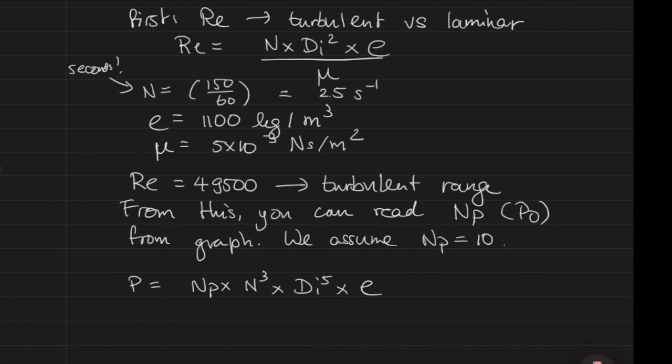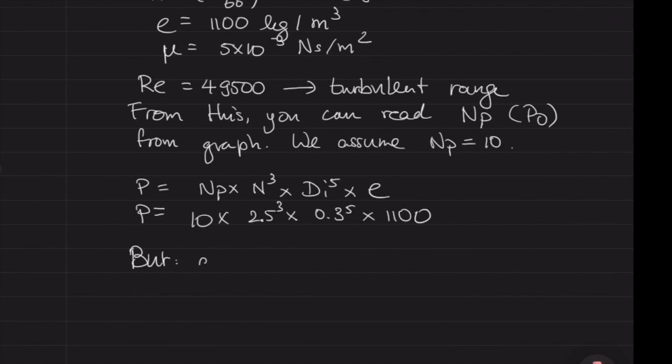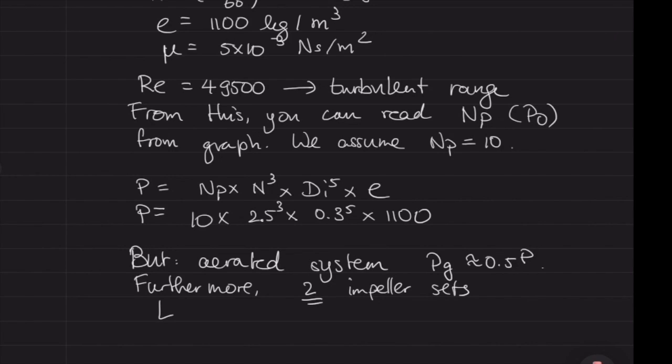In the turbulent regime, we can use this formula to determine the power: the power number, the speed, the diameter of the impeller, and the density. There we have the power needed to drive the impellers. Two things to take into account: first, we're looking at the power of the gas. When you have gas, it's easier to mix because of all the bubbles—it's fluffy like chocolate mousse. In an aerated system, you only need roughly half the power.